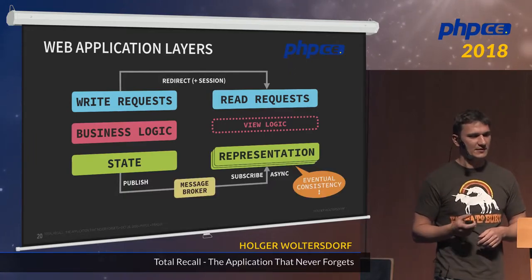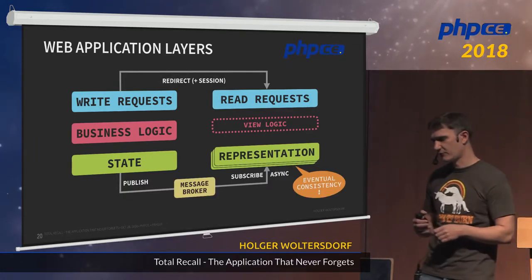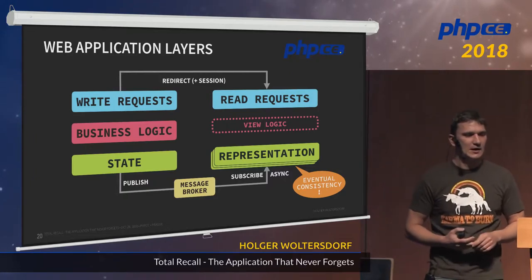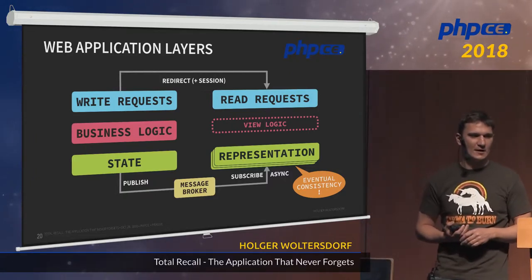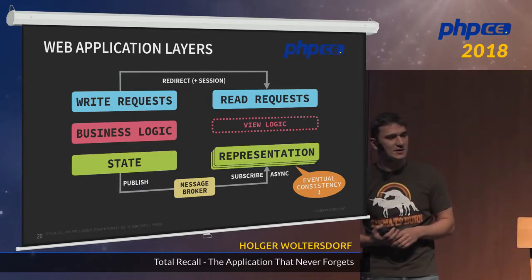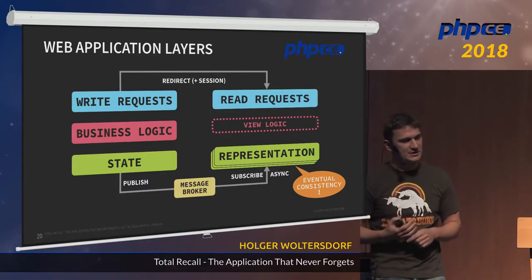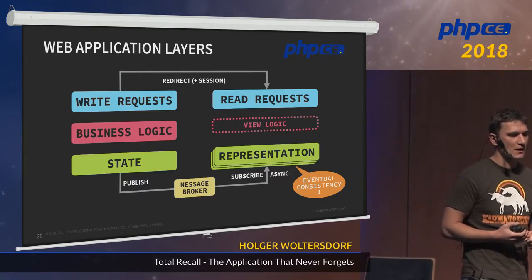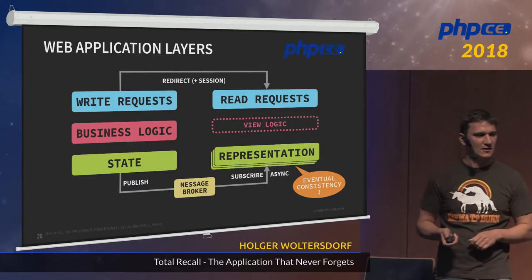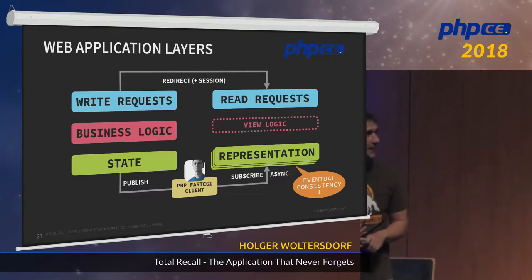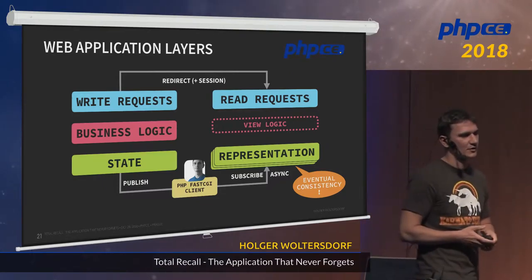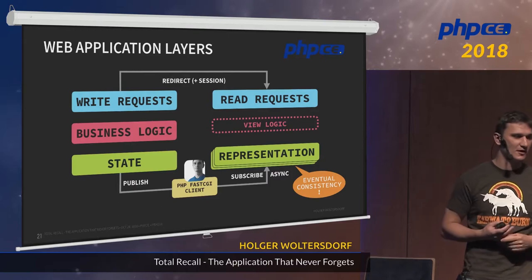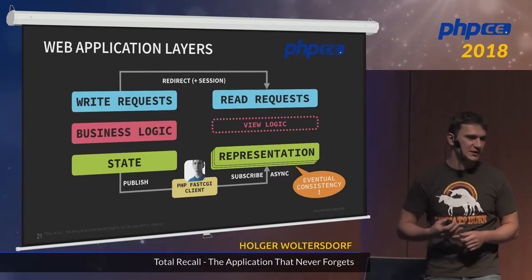You can also do this update asynchronously if you have multiple representations of the same state — then you need some kind of message broker in the middle. Be aware this leads to eventual consistency, so the user might not see the current state immediately. I also wrote a small library called PHP FastCGI Client, which is able to use the PHP-FPM server to do asynchronous calls and is a good application to update view presentations in the background.